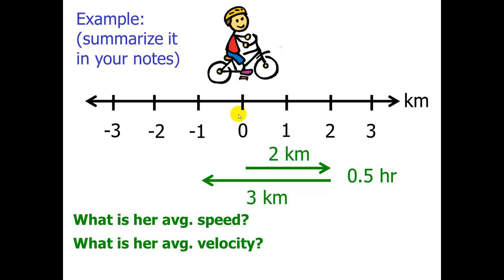So, let's take a look at an example. You should summarize this example in your notes. Again, you don't have to copy it. What is her average speed? What is her average velocity? So, the bicycle is moving 2 kilometers forward and then 3 kilometers backwards. Her average speed is distance over time. So, 5 kilometers divided by 0.5 hours is 10 kilometers per hour. What is her average velocity? We have to remember that her displacement was negative 1 divided by half an hour. It gives us negative 2 kilometers per hour. And I'm specifying to the left here because it is a negative velocity. And that does mean to the left, which also reinforces the idea that velocity is a vector. It has direction.